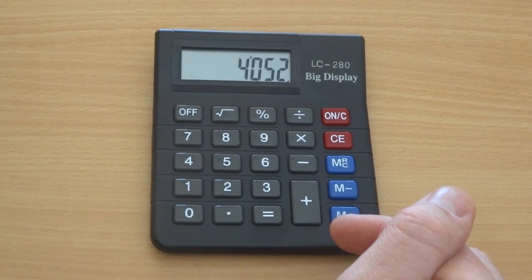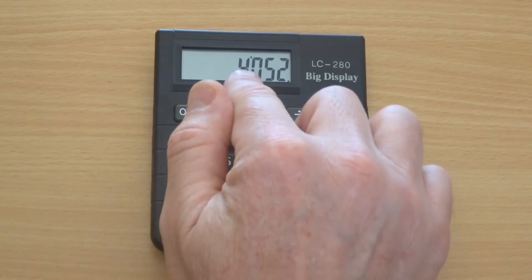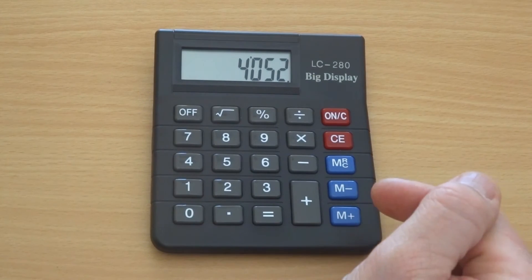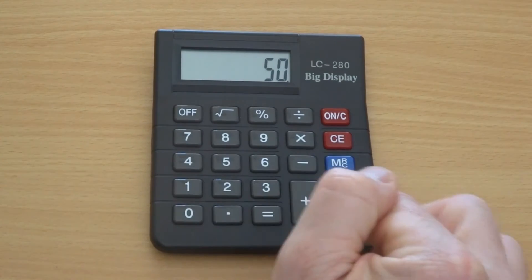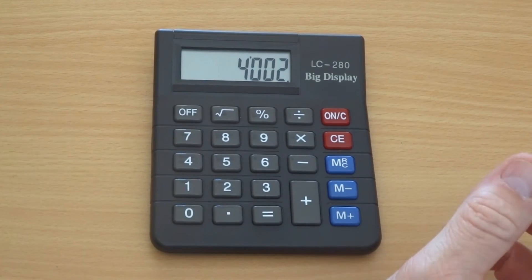You start to see the idea of face value and place value coming out here. So now I get 4052. If I had to remove the 5, I would be subtracting 50, and we can check it. That's what the game wipeout is about.